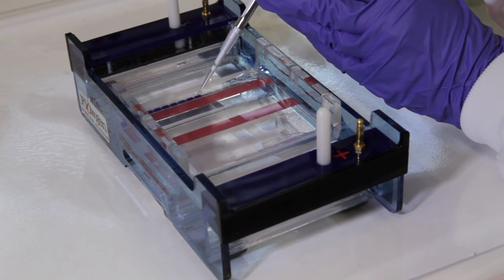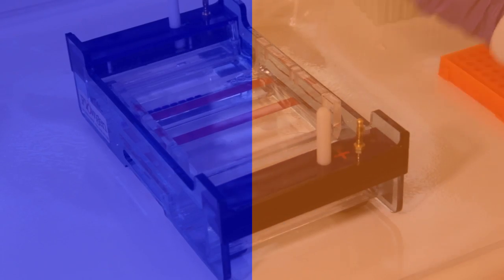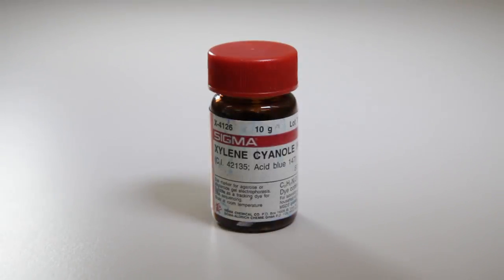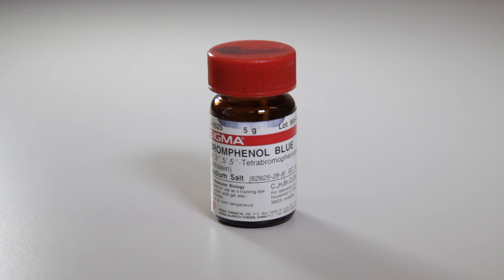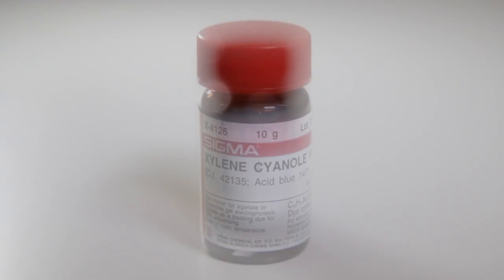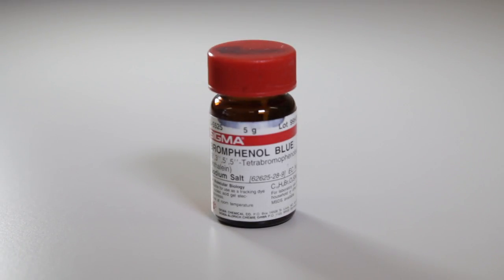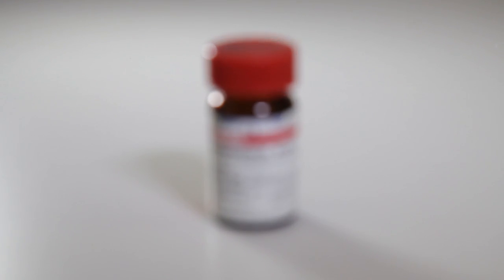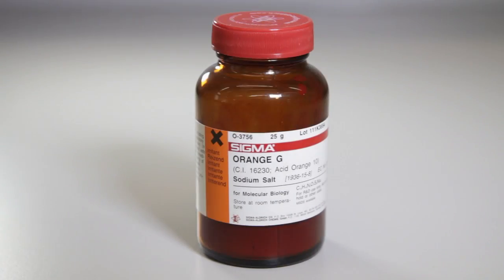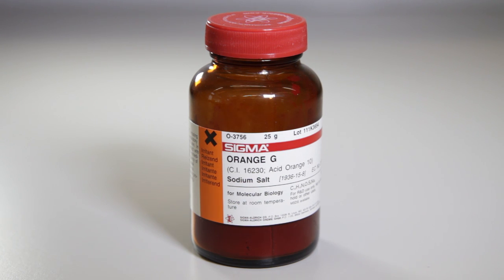Two kinds of loading dye are usually used, blue and orange. The blue dyes are xylene cyanol and bromophenol blue. The xylene cyanol dye runs at about 4000 base pairs in a 1% gel but this varies with gel concentration. Bromophenol blue is smaller in size and runs at about 300 base pairs in a 1% gel. Orange G runs right at the front at around 50 base pairs.